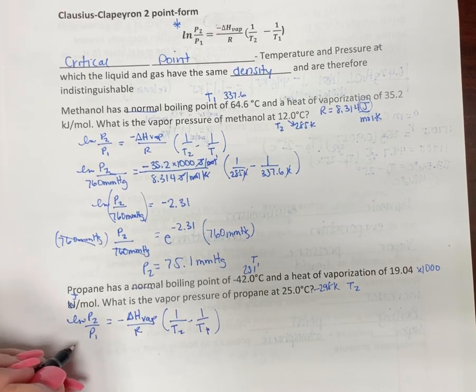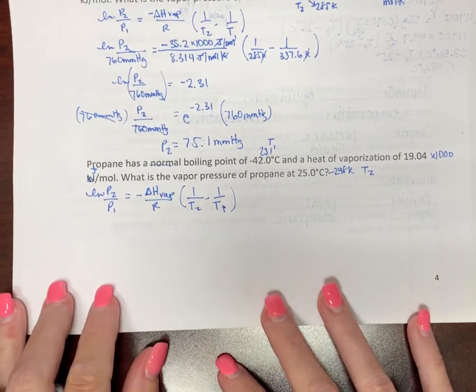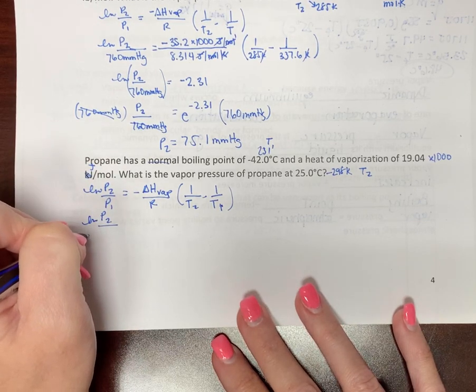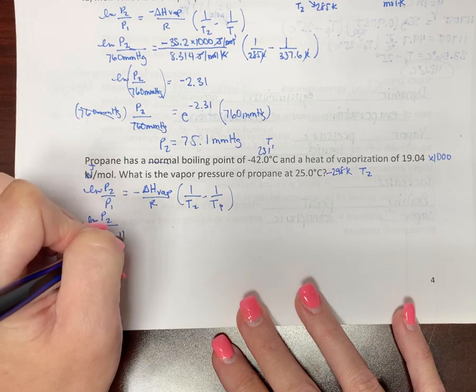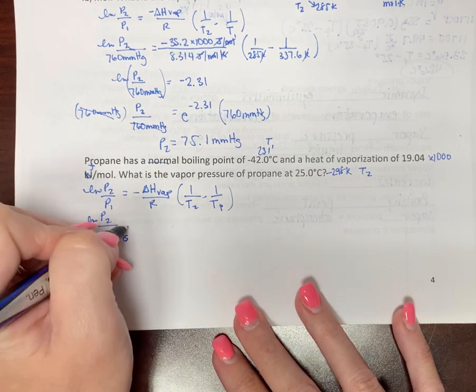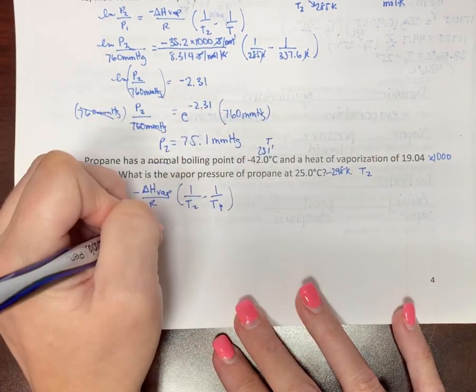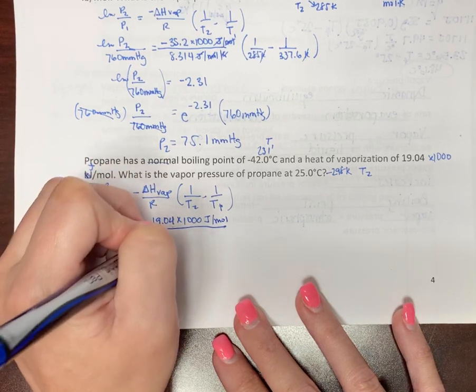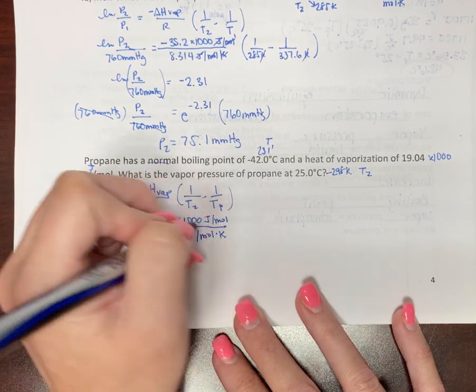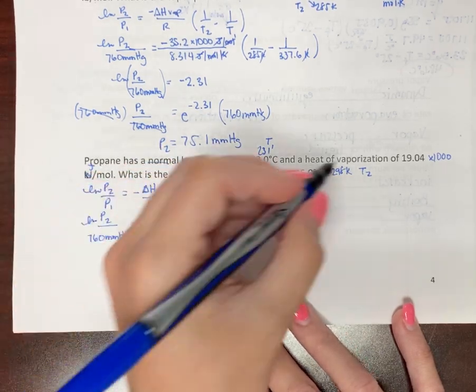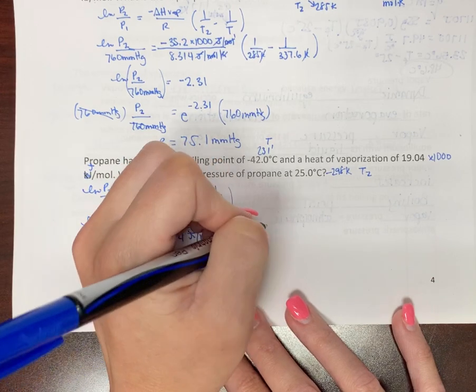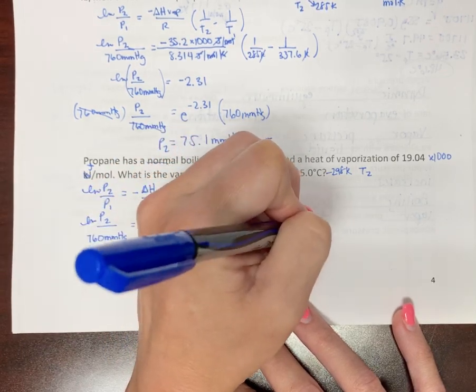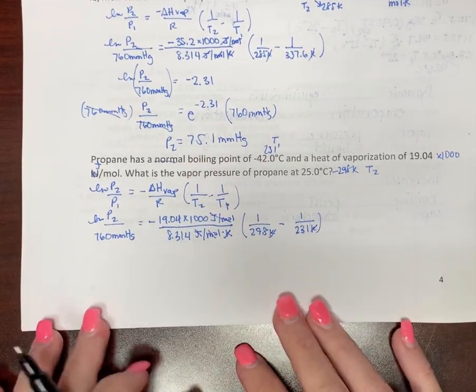It's just plugging and chugging. P2 over P1 equals negative delta H vaporization over R, 1 over T2, 1 over T1. So now plug and chug. You can do this. Again, it's just a little bit of nasty math. It's not near as hard as calculus, I promise. Solving for P2. P1, normal atmospheric pressure, 760 millimeters of mercury, equals negative 19.04 times 1,000 joules per mole over 8.314 joules per mole Kelvin. So joules, joules per mole. And T2, 1 over 298 minus 1 over 231 Kelvin. Kelvin. Now the Kelvins are going to go away.